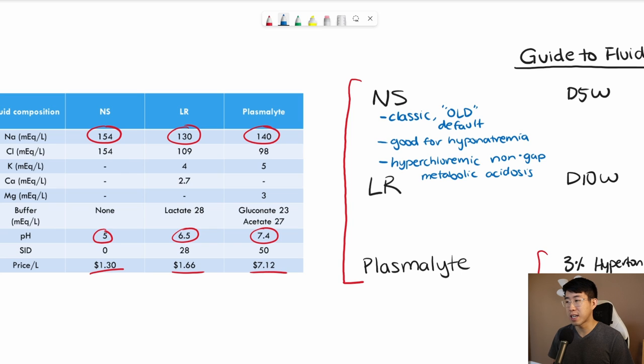Moving on to lactated ringers, I would say that you basically can never go wrong with choosing lactated ringers. This, at this point, should probably be your default and you can basically order it in any different scenario. A couple of things that people sometimes get concerned about with lactated ringers is the potassium level. And so they argue that if a patient has hyperkalemia, then you should not give them lactated ringers because it could theoretically increase their potassium levels. But this is actually not the case.